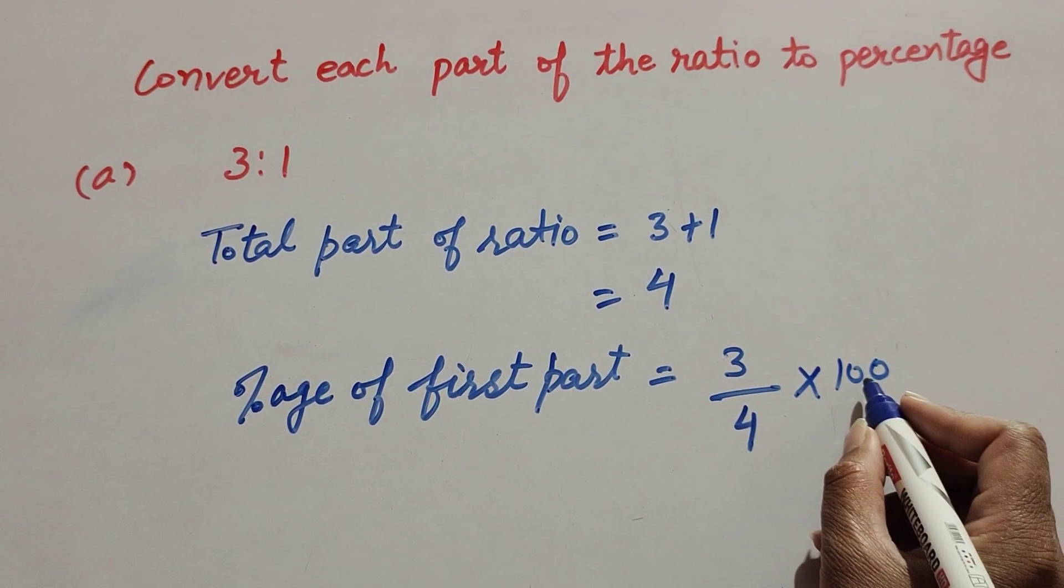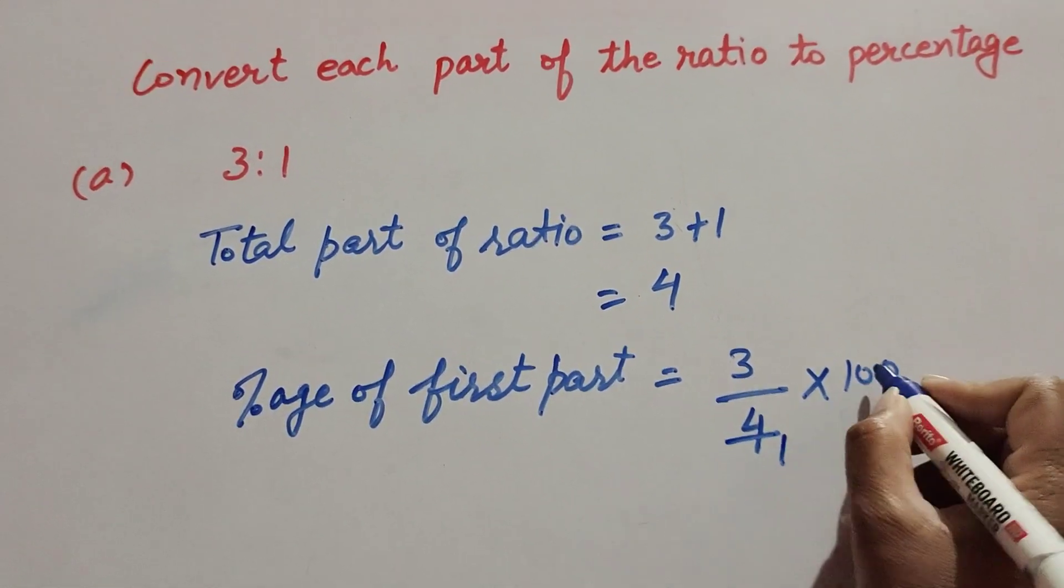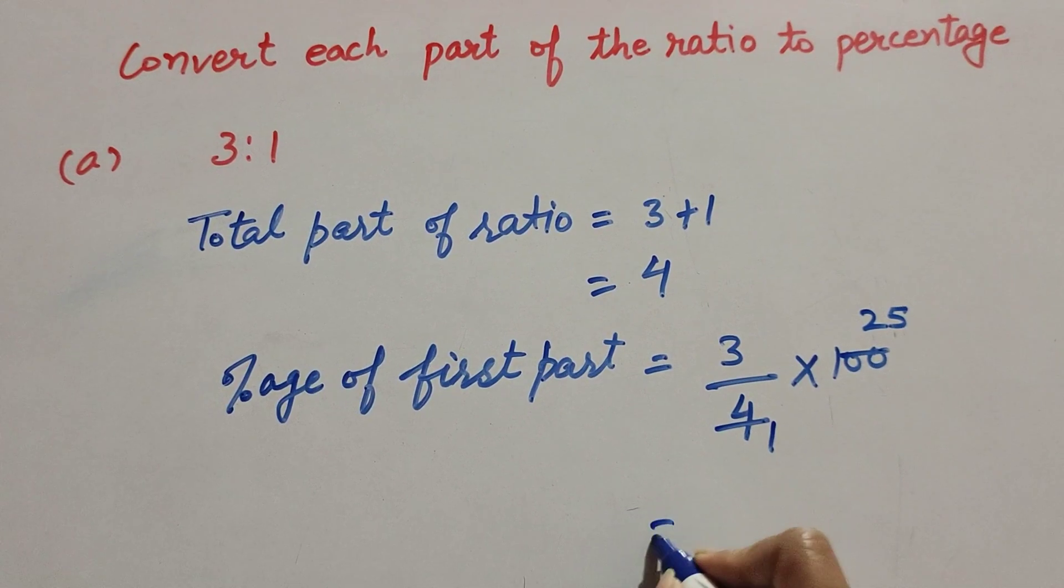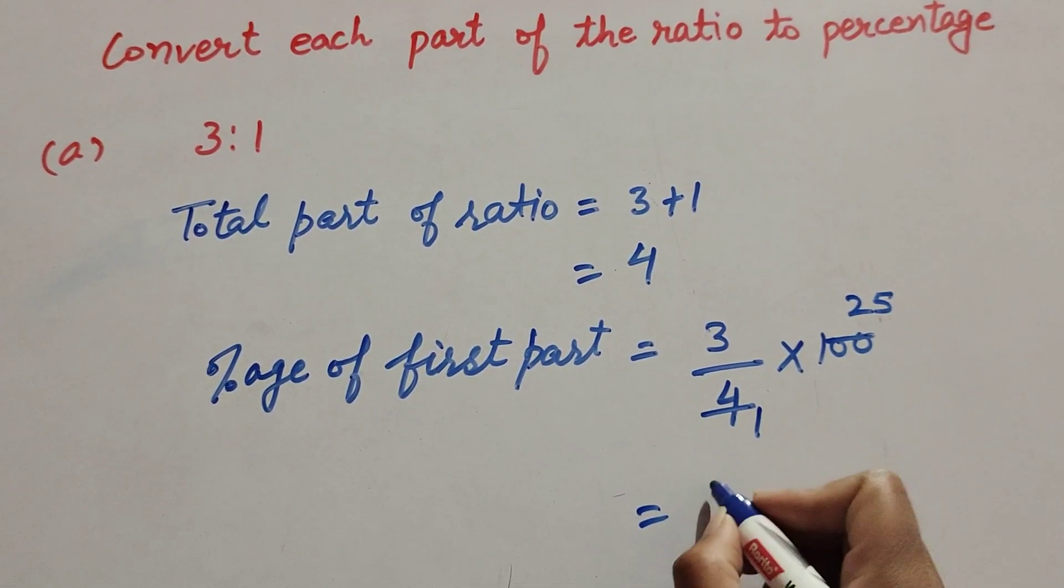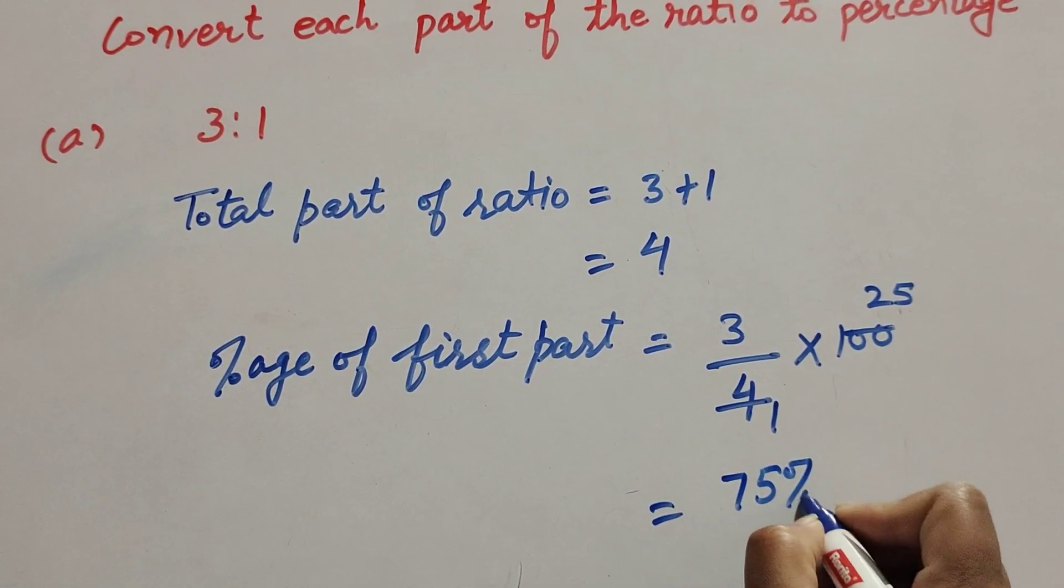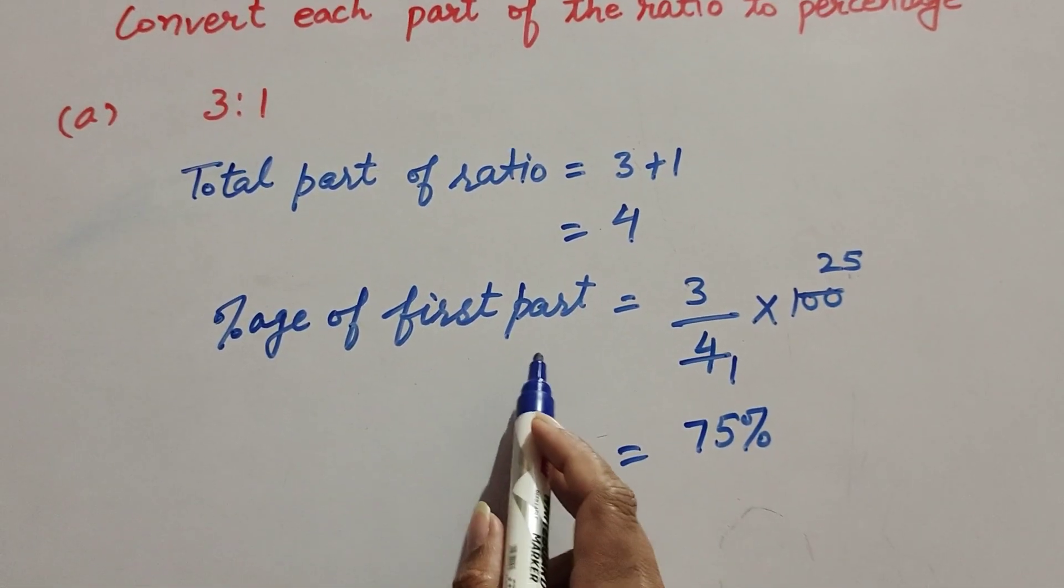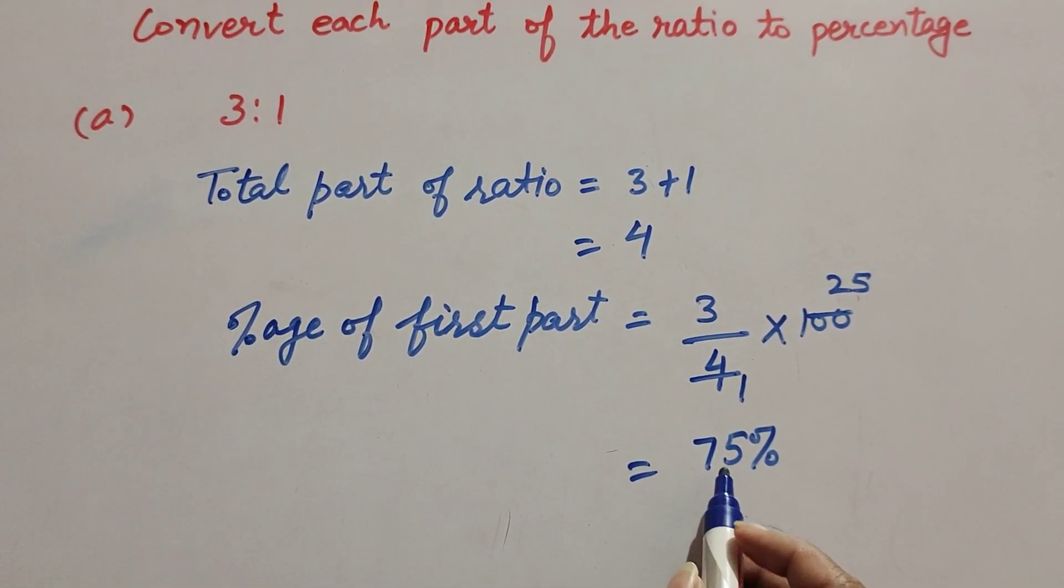4 and 100 both are divisible by 4, so we cancel them. 4 ones are 4, 25 fours are 100, and it is equal to 3 multiply by 25, 75 percent. So percentage of first part is equal to 75 percent.